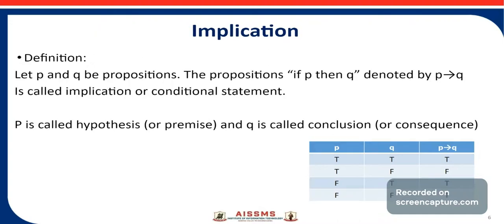Next logical operator is implication. Consider two propositions P and Q. The proposition 'if P then Q' is denoted by P implies Q. This is the symbol used to represent implication. It is also called a conditional statement. In this statement, P is called the hypothesis or premise and Q is called the conclusion or consequence.